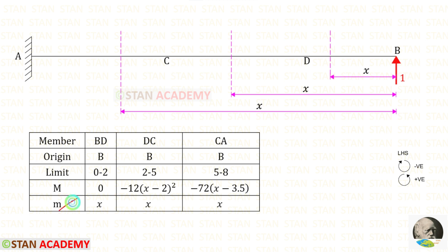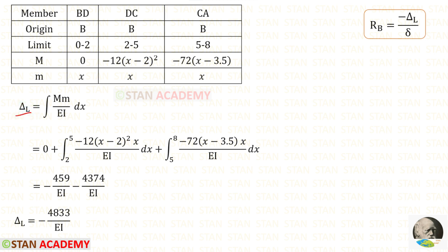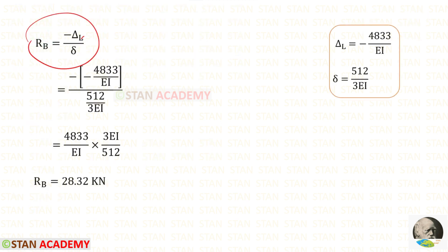Now we are going to find the unit moment m̄. To find that, we remove all loads and apply a unit load in the direction of RB. For all sections, the unit load acts in the anticlockwise direction so it is positive, and the distance is x. So m̄ = x for all members. Now let us find delta_L using the formula: integration of M times m̄ divided by EI dx. Using this formula, we get delta_L = 512 upon 3EI.